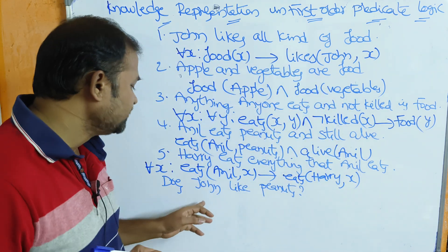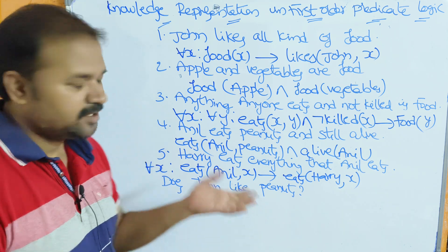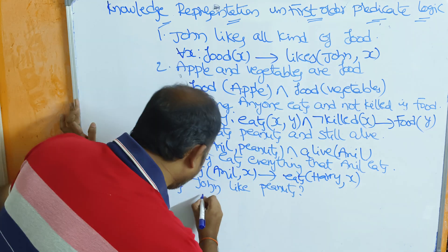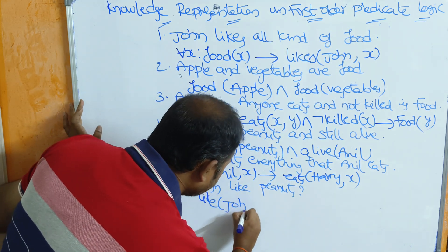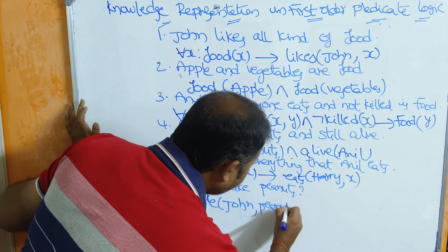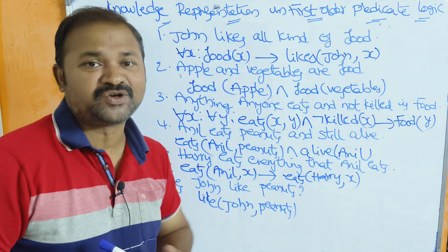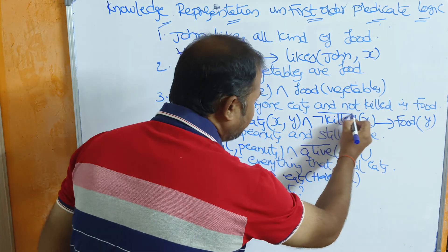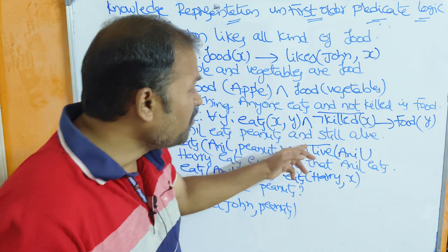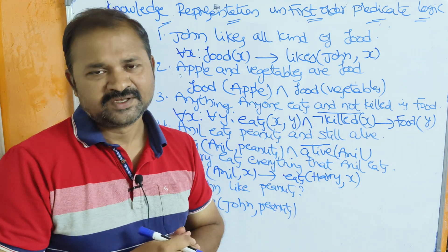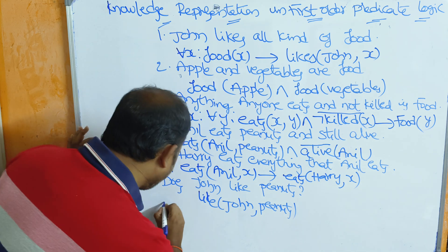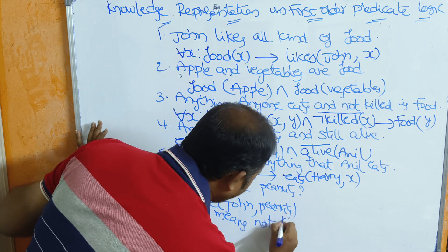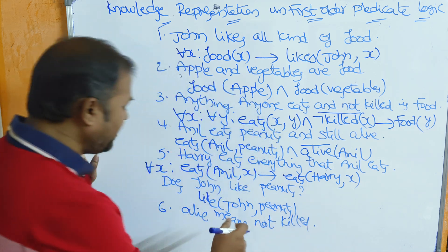The query is: does John like peanuts? We represent this in well-formed formula as likes(John, peanuts). In order to solve this problem, we have to add two more predicates. Here we have 'alive' and 'not killed', and both have the same meaning. So alive means not killed: alive(x) → ¬killed(x).